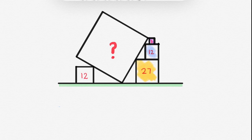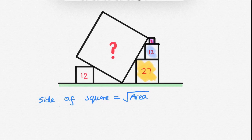We know that side of square equals to square root of area. Hence, side of pink square will be square root of area of pink square and the area of pink square is 3. So, side will be square root of 3.